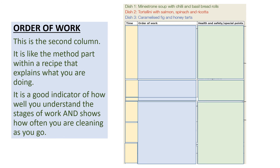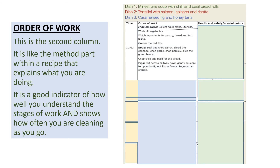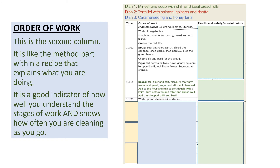For example: time 10:00 — order of work: mise en place, getting ready, washing vegetables, getting things ready. At 10:15 straight in — making bread. At 10:20 — washing up and cleaning work surfaces. You can see that it's not going into 'this is how much flour I use' — it's just giving a quick overview of how they made that first part of the bread, and then at 10:25 carrying on.